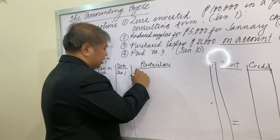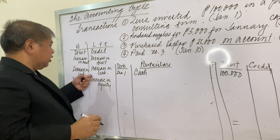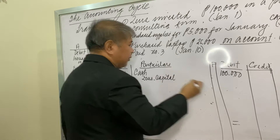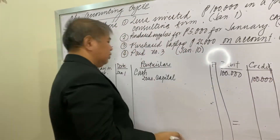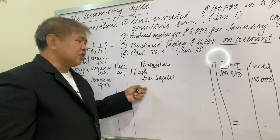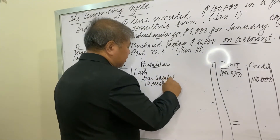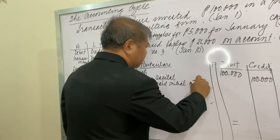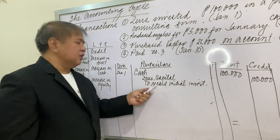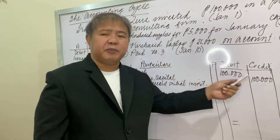For January 1: cash increased, and cash is an asset, so debit cash for 100,000 pesos. Capital increased, and an increase in equity is a credit, so credit Zeus Capital for 100,000 pesos. A complete journal entry also includes a short description of the transaction: 'To record initial investment.'